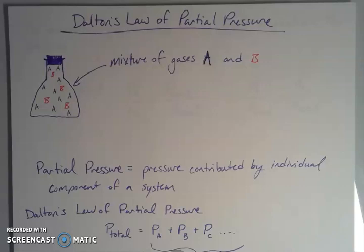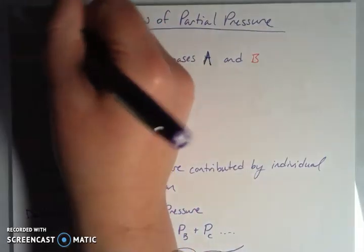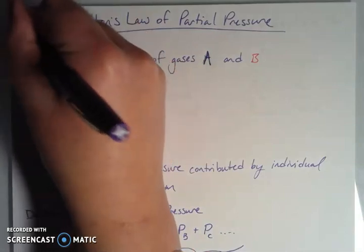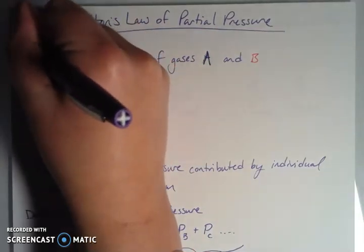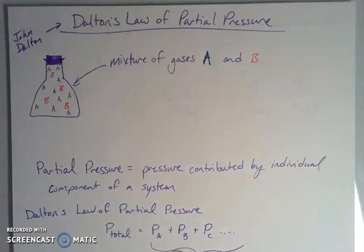And what happens to the pressure of the system when we have different gases in there. So what we're getting into here is Dalton's law of partial pressure. Dalton is the same Dalton that we heard about, that would be John Dalton, when we talked about atomic theory. So John Dalton is the father of modern atomic theory, and he's really the first one after Democritus to say everything is made up of atoms, and these atoms have individual identities, and different elements have different masses.